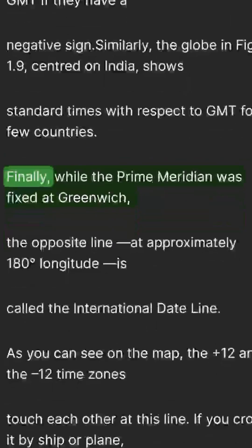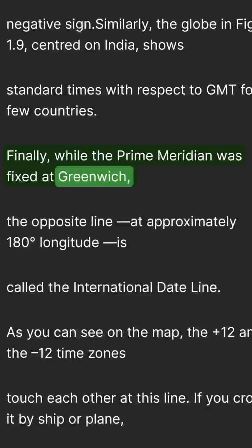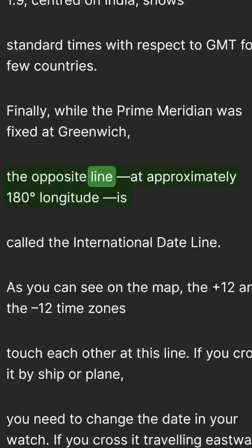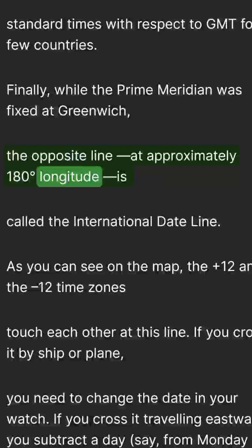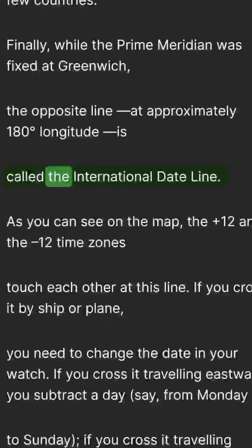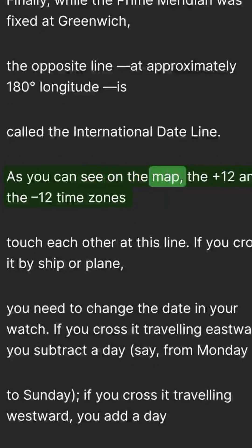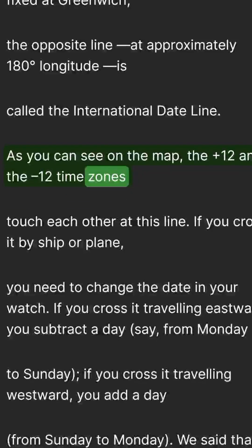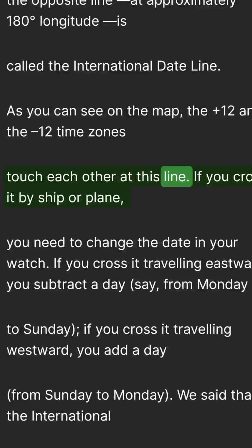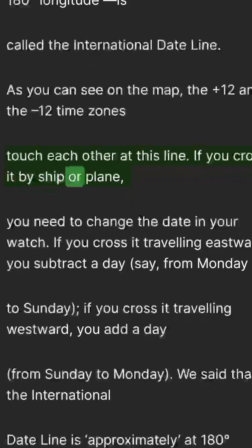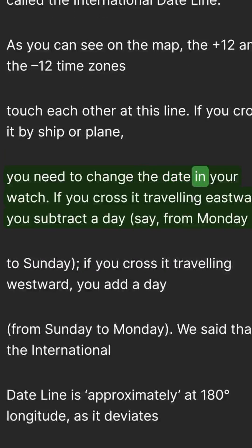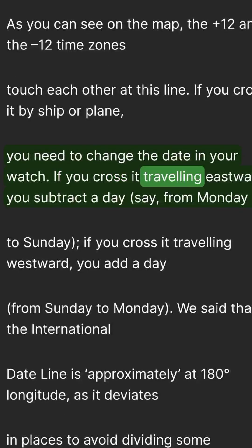Finally, while the prime meridian was fixed at Greenwich, the opposite line at approximately 180 degrees longitude is called the International Date Line. As you can see on the map, the +12 and the −12 time zones touch each other at this line. If you cross it by ship or plane, you need to change the date on your watch.